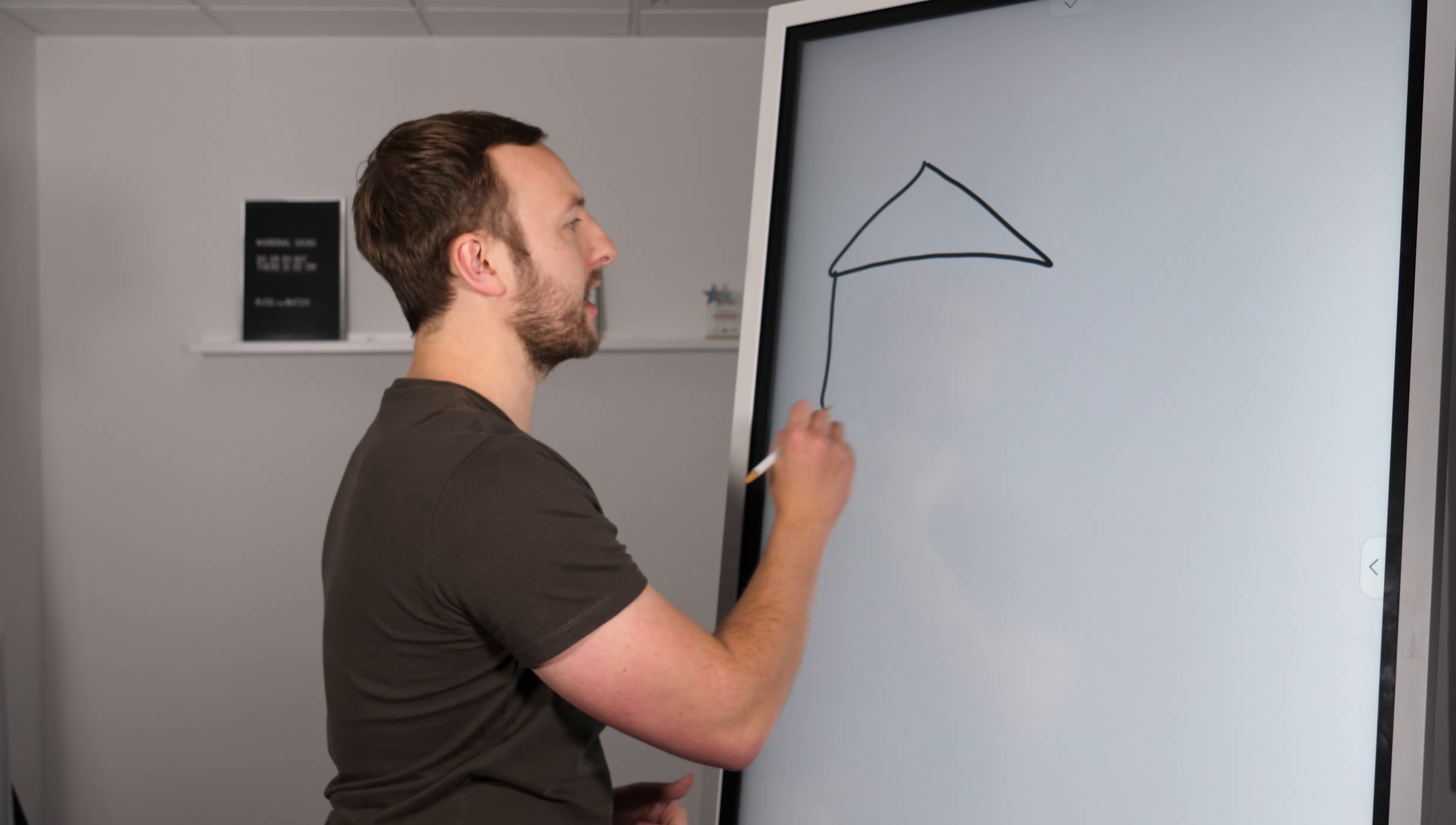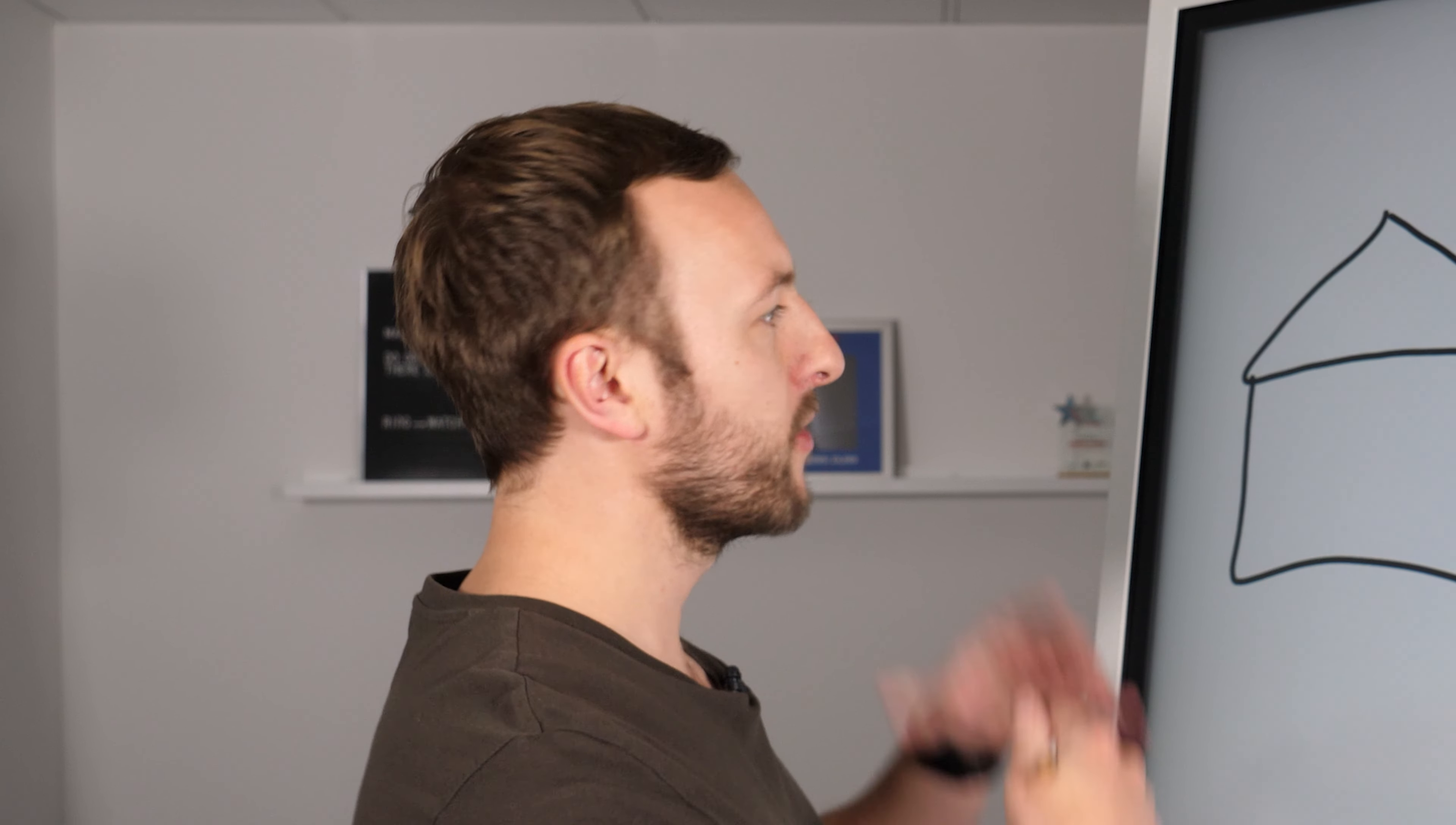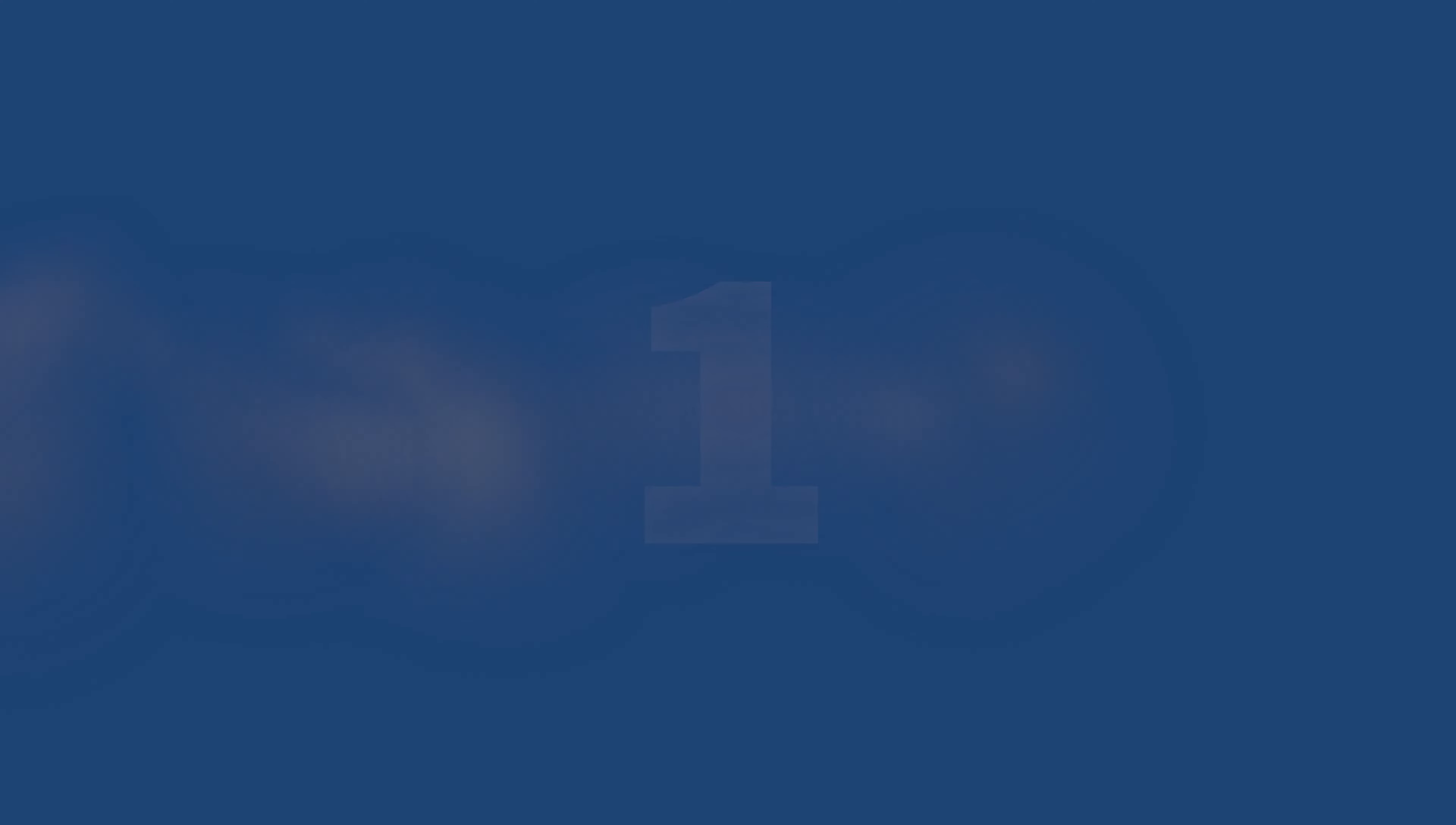There are actually four main ways of making money in property, and I guarantee you number four will be a bit of a shock. For this, we'll say this is a £200,000 property. How are we going to make money? Well, first of all, cash flow.